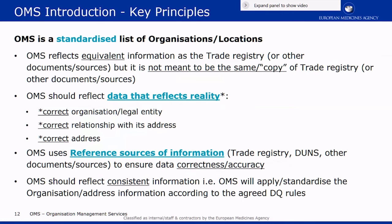The biggest principle of all: please keep in mind that OMS is supposed to provide a standardized list of organization and location details. OMS is not going to provide a copy of the data that organizations may have with the trade registry or within manufacturer certificates. This is not the goal of OMS. OMS has a data quality standards document. The rules are published, and every time we master a record or handle a change request, the data will be published following those rules.